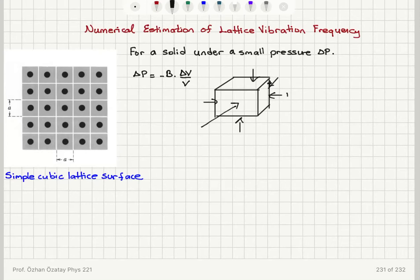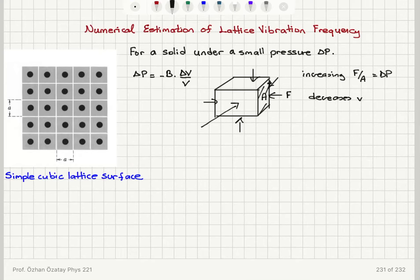The volume will decrease if we increase the pressure — delta p, force per area acting on this cube. So increasing pressure decreases volume. Because of that, when we increase pressure the volume decreases, we have to introduce a minus sign. So delta p is equal to minus the bulk modulus times the fractional change in volume, delta v over v.